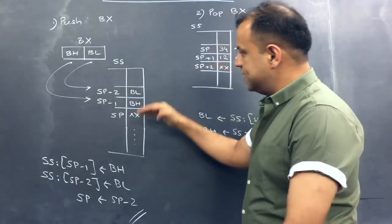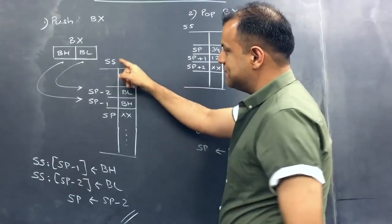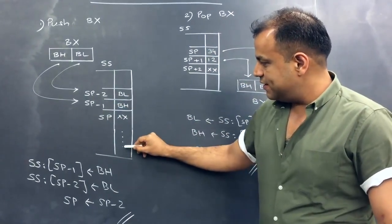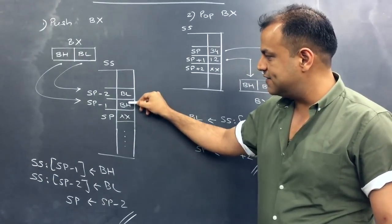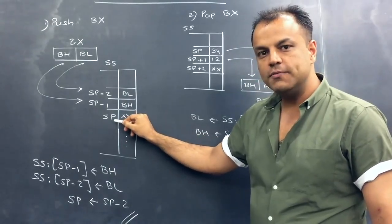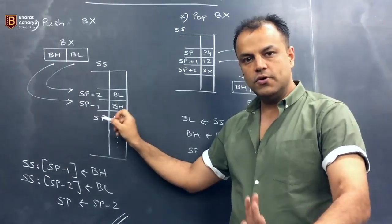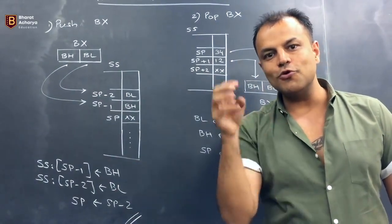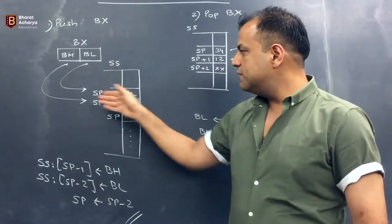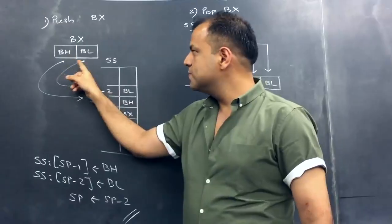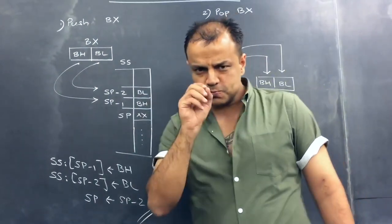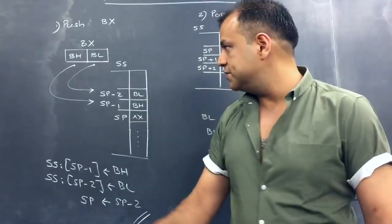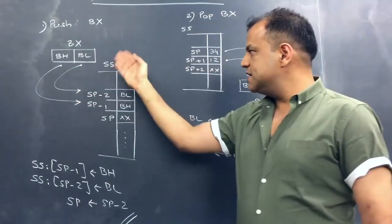The instruction PUSH BX means you want to push the value of the BX register into the stack. The stack is part of the stack segment. SS gives the segment address — it tells where the stack segment is. In the stack there are various elements; the current top of stack is pointed by SP. When you push BX, the new value comes above the current top of stack. Since BX is a 16-bit number and each memory location holds one byte, it will occupy two locations.